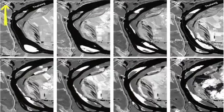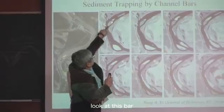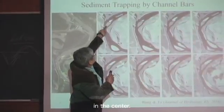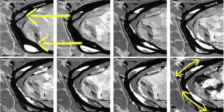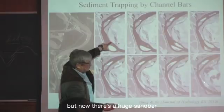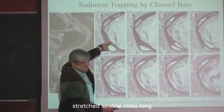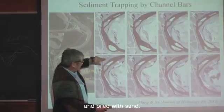This is a satellite image taken in 1985, and this is a satellite image taken in 2015. Look at this bar in the center — it has become elongated and longer, and this bar has become much larger. And there was a bar here at Angola, the Angola prison. Now there is a huge sandbar stretched several miles long, very wide, and piled with sand.